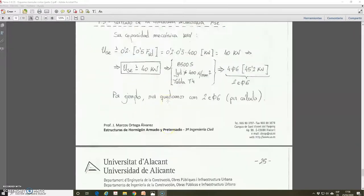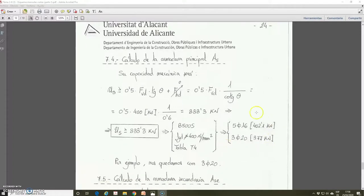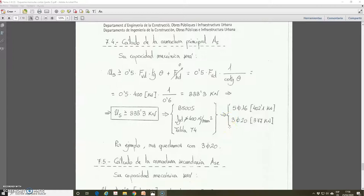And in the previous video, we have arrived here. We have calculated the mechanical capacity of the principal reinforcement, and we have planned a possible solution, and finally we take this one. But also the other one, five bars, was also acceptable. There is no problem in choosing one or the other, depending on your preferences.